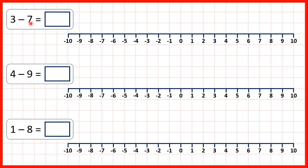Now for these questions, we're subtracting a larger number from a smaller number. You might think that we can't do that, because we can't do that using column subtraction. But we can subtract a larger number from a smaller number. All it means is that our answer will be negative. So on a number line, below zero, we can count back minus one, minus two, and so on. And that can help us subtract.